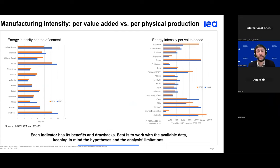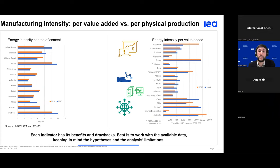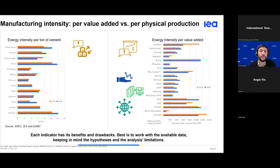We can make two types of indicator for industry: per value added and per physical output. The indicator per value added requires harmonized data using deflators and purchasing power parity but is good for comparing sectors and countries over time. The indicator per physical output requires careful methodology — especially on trade of intermediate products such as clinker in the case of cement — but avoids currency issues and is excellent at the plant level or for tracking technology deployment.